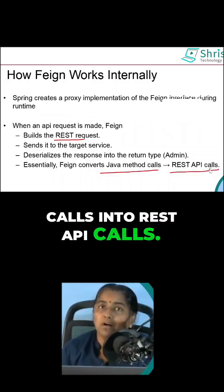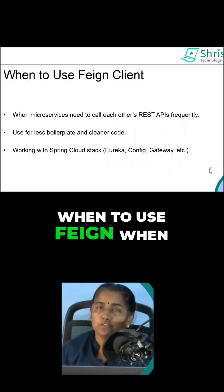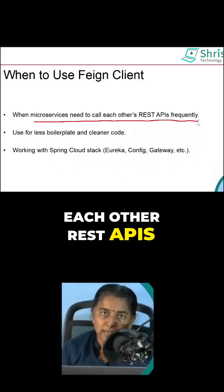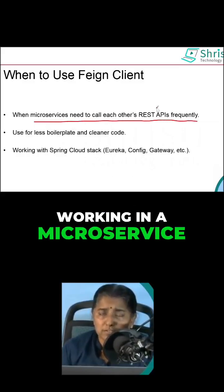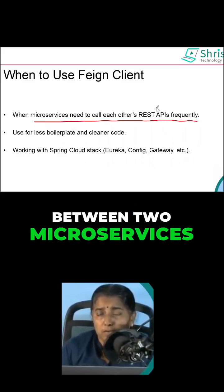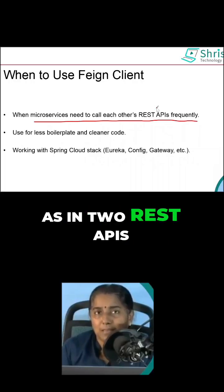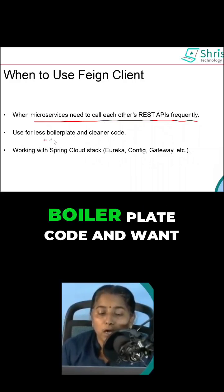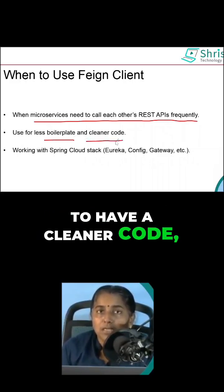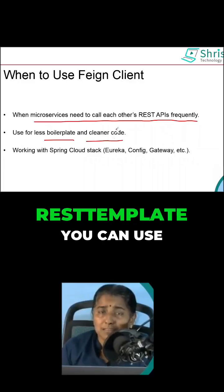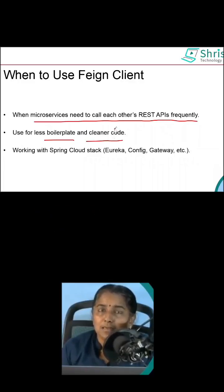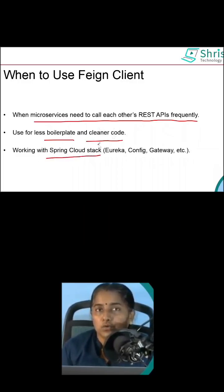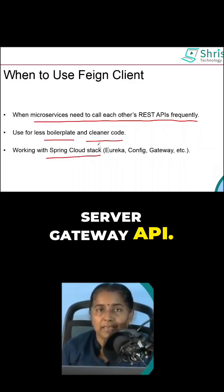When to use Feign Client: when microservices need to call each other's REST APIs frequently, when you are working in a microservice environment and want to communicate between two microservices as in two REST APIs frequently, use Feign Client. When you want to avoid boilerplate code and have cleaner code, instead of using RestTemplate you can use Feign Client. Use OpenFeign if you are working with the Spring Cloud stack — for example, if you are using Eureka, config server, or gateway API.